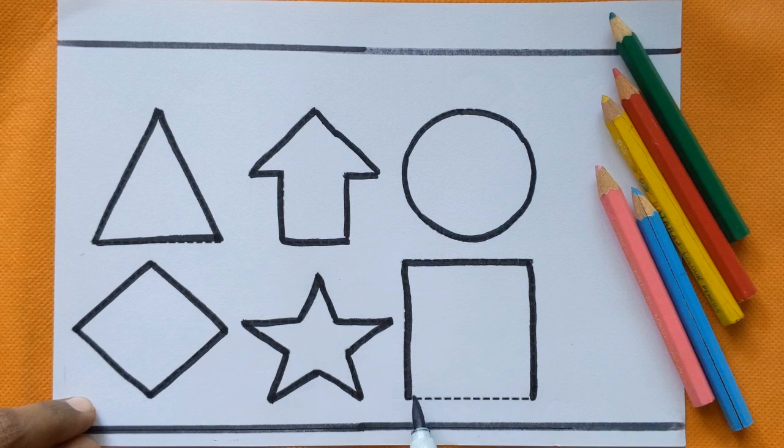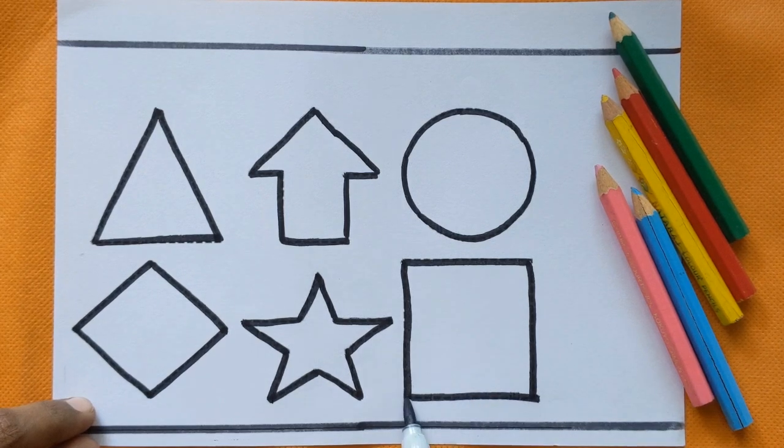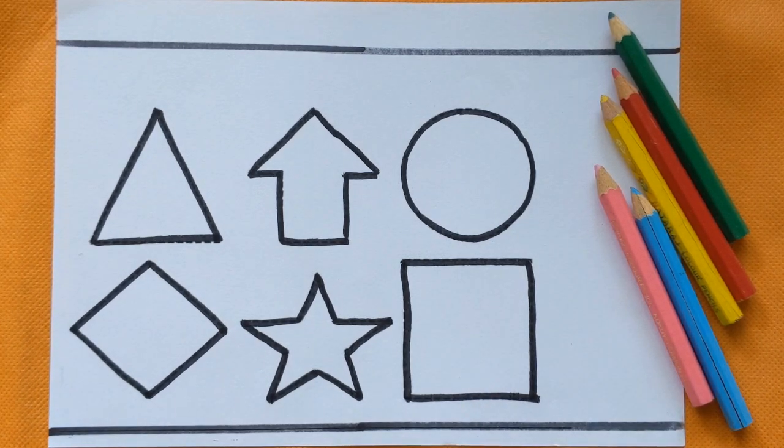And which shape is this, kids? This is square. Let's color the shapes now.